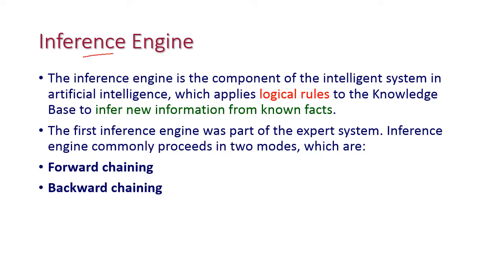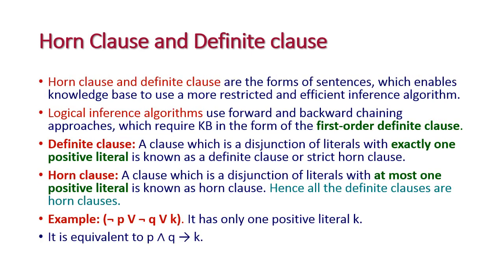First, let us see what is an inference engine. The inference engine is the component of an intelligent system in which logical rules are applied to the knowledge base — KB — to infer new information from known facts. That is, we extract new information from already existing information stored in the knowledge base. The first inference engine was part of the expert system. There are two modes: forward chaining and backward chaining. The important classes in the inference engine are horn class and definite class, which are different forms of sentences available in the knowledge base, and their purpose is to improve the efficiency of the inference algorithm.